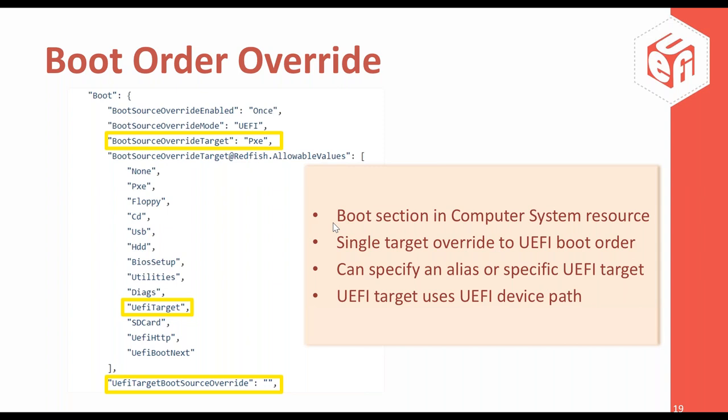The boot order override consists of several properties found within the computer system resource — not a separate resource. They allow either a one-time or continuous override of the UEFI boot order. With the boot order override target property, you specify an override alias for the boot target — for example, a PXE target being selected, telling platform firmware to attempt a boot order override with any discovered PXE target. If you'd rather specify a specific target, you use the UEFI target value with the UEFI target boot source override property, specifying the full UEFI device path.